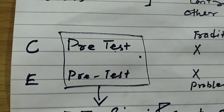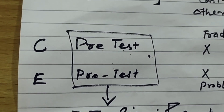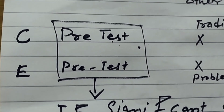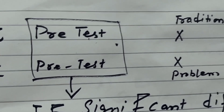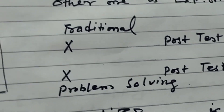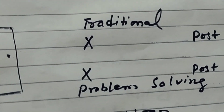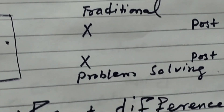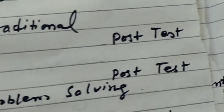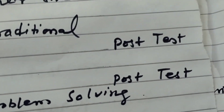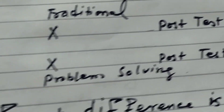You will take a pre-test of both the control group and the experimental group. Then a treatment is given — one group is taught through the traditional method and the other through the problem-solving method. After the treatment, you take post-tests from both groups.